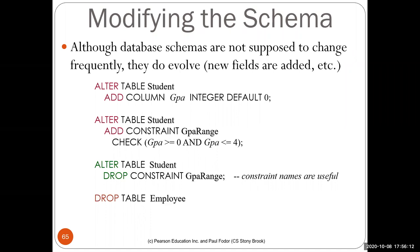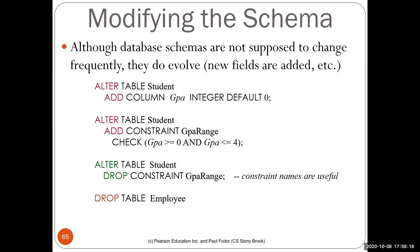If you want to modify the schema — a quite common situation — you can add a column with a default value using ALTER TABLE. You can also alter a table to add constraints or drop constraints, or drop the entire table. So you can modify the schema in any way you want at runtime.